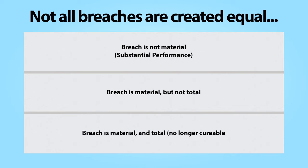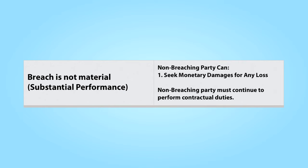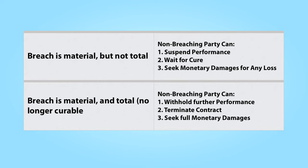If a party fails to fulfill a contractual promise, no matter how insignificant, that party has breached the contract. The non-breaching party can seek damages for any loss resulting from the other party's breach. But in general, the non-breaching party is not relieved of its future performance obligations under the contract. In the case of minor breaches, that party must continue to perform its contractual duties. When a breach is more serious — that is, when the breach is determined to be material — the non-breaching party is permitted to take additional steps in response. Not only can that party seek damages for any loss resulting from the breach, but it can also suspend its further performance obligations under the contract and wait for the breaching party to cure the breach.